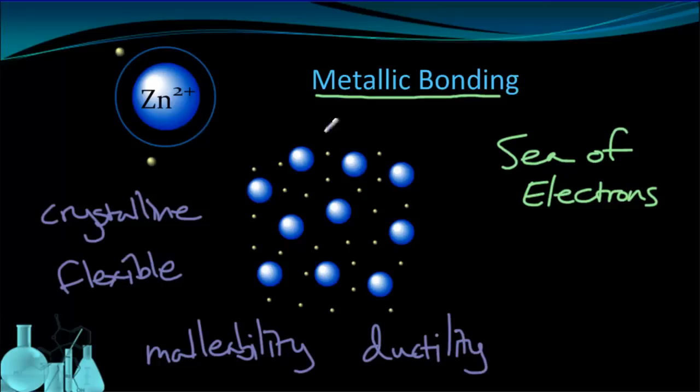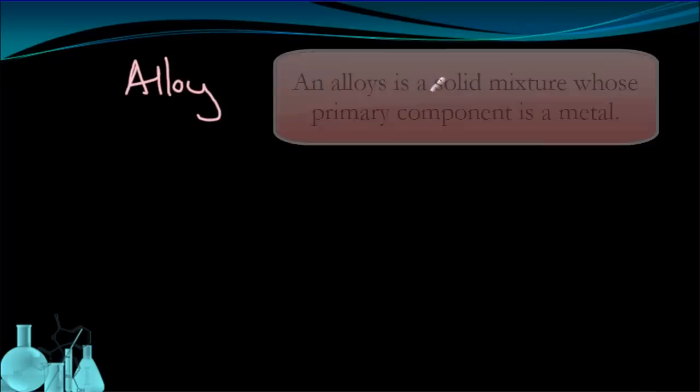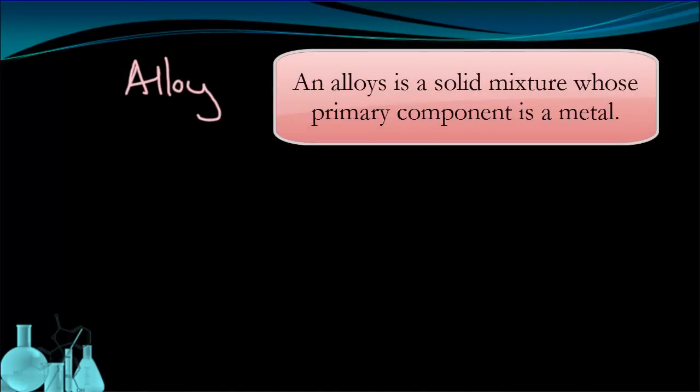This sea of electron arrangement is also useful for allowing us to create mixtures with metals. In fact, a special kind of mixture, it's a solid mixture called an alloy. So an alloy is a solid mixture whose primary component is a metal, but it's mixed with some other substance, some other element. It can be a metal or a nonmetal.